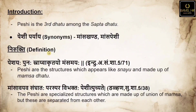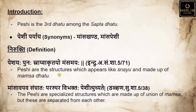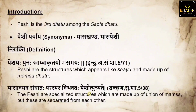The Nirukti (definition) of Peshi: 'Peshi punaya snaya ava krita yo maamsa maya.' Acharya Hindu, commenting on the Ashtanga Sangraha reference, says that Peshi are structures which appear like Snaya and are made up of Maamsa Dhatu. Maamsa Ava Yava Sangha Tha Paraspara Vibhatta — Peshi is a specialized structure made up of the union of two to three different Maamsa coming together.